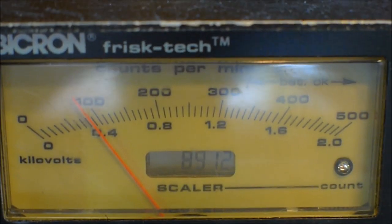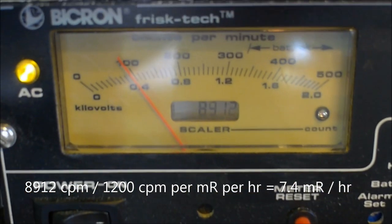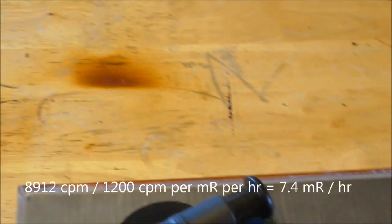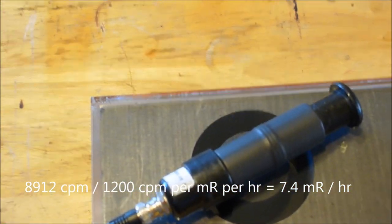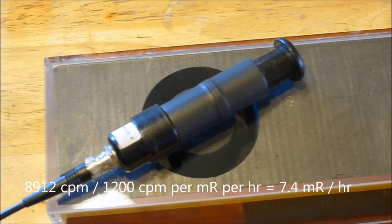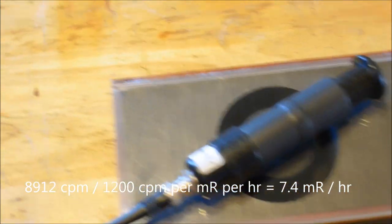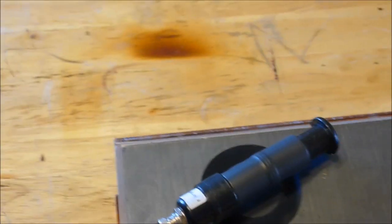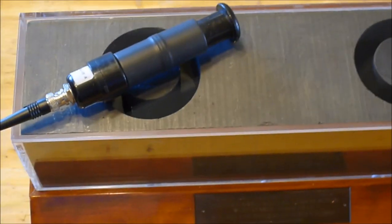The count has concluded. As you can see, we have about 8,000 or 9,000 counts. This is equivalent with this probe to an exposure rate of about 7.5 millirentgens per hour. So no surprise there, this is real uranium metal in here.